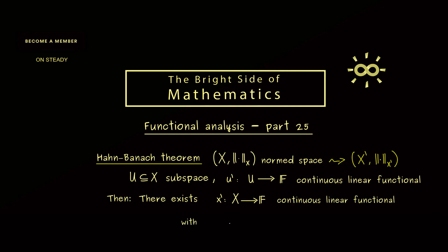Now we get two properties. The first one is that x' is an extension of u'. This means that they are the same when we only put in members from U. Of course this is what we mean by an extension, but we also don't change the operator norm of u'. So the norm of x' in the dual space of X is the same as the norm of u' in the dual space of U.